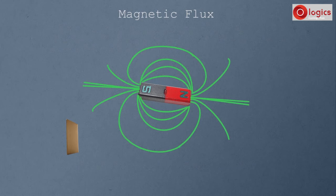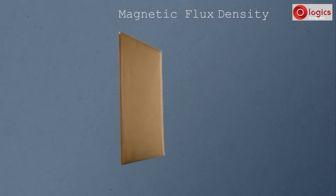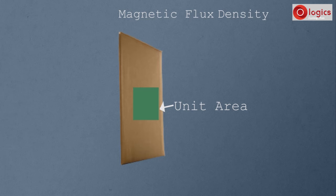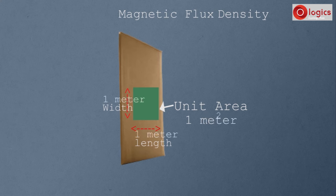Now let's understand what is magnetic flux density. In magnetic flux, we considered the whole surface of the cardboard. But in magnetic flux density, we consider only the unit area of the surface. Unit area equals unit length multiplied by unit width. In the CGS system, unit area equals 1 cm × 1 cm, which is 1 cm². In the SI system, unit area is 1 m².